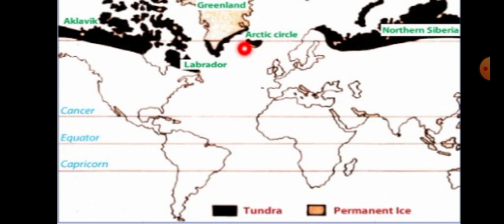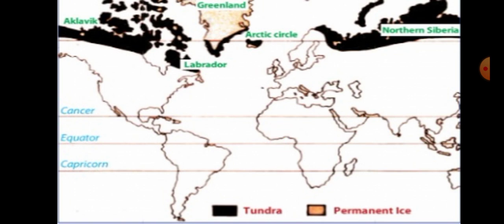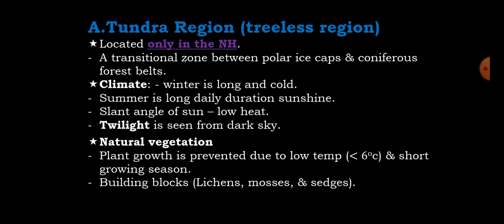The frigid zone includes northern Siberia, the Arctic Circle, Greenland, Aklavik near Alaska, and Antarctica is also a part of the frigid zone.